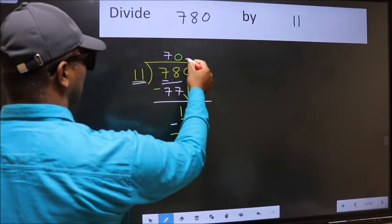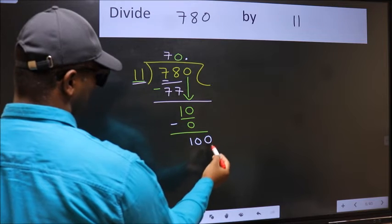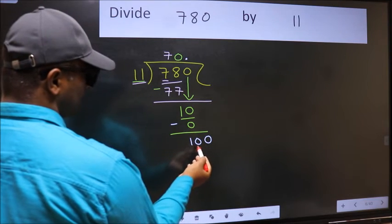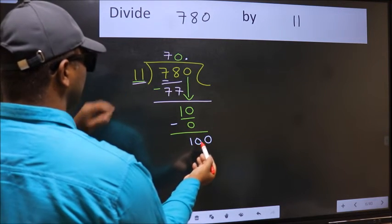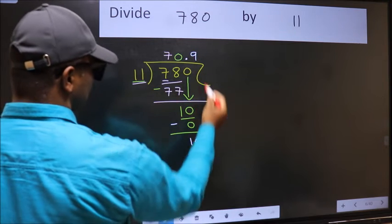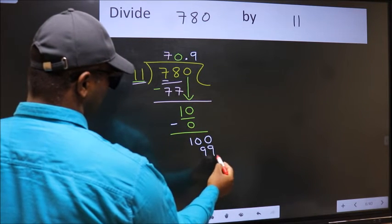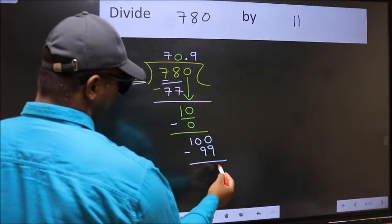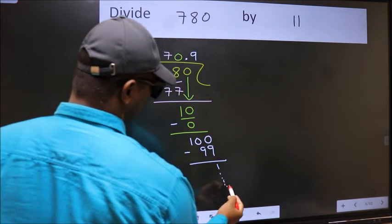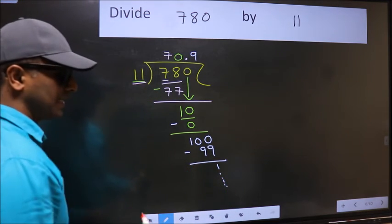So now you can put a dot and take 0, giving 100. A number close to 100 in the 11 table is 11 times 9, which is 99. Now you should subtract - you get 1 and continue the division. I am not doing that.